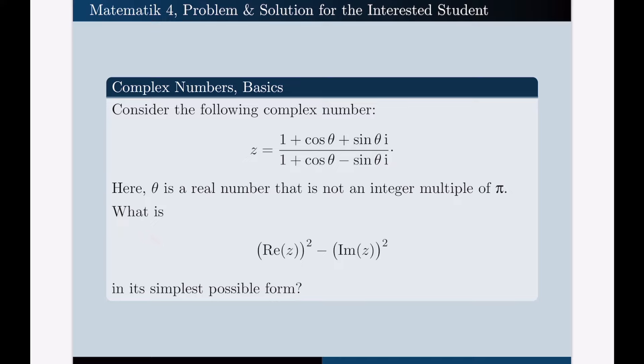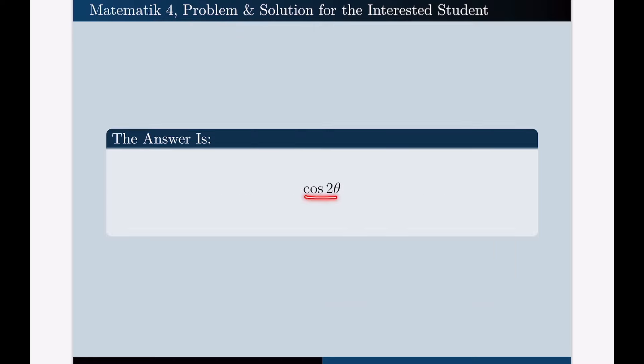What is this combination: the real part of z squared minus the imaginary part of z squared, in its simplest possible form? It would be a good idea if you pause the video at this point and try to solve the problem yourself first. If you do your calculations correctly, the answer that you will get is cosine 2 theta.